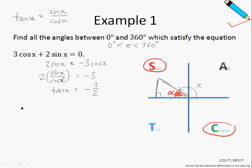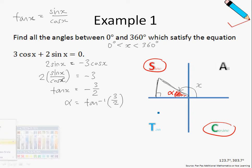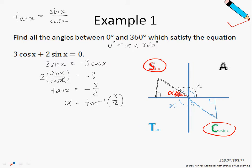In the first scenario, alpha equals tan inverse 3 over 2 — recall that to find alpha you ignore the negative sign. In the second scenario, I will measure x from here all the way to the cosine quadrant, drawing my right-angled triangle and identifying alpha. So the two answers for x are 180 degrees minus alpha or 360 degrees minus alpha.